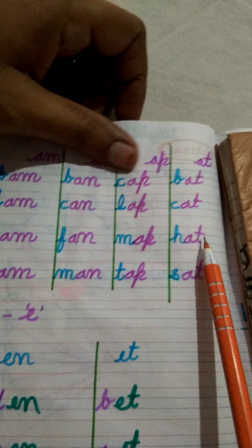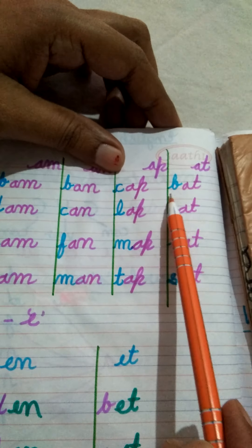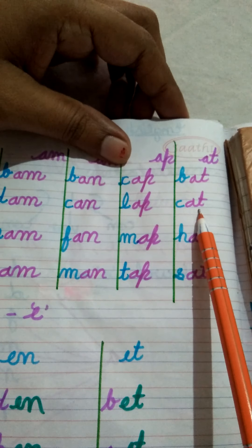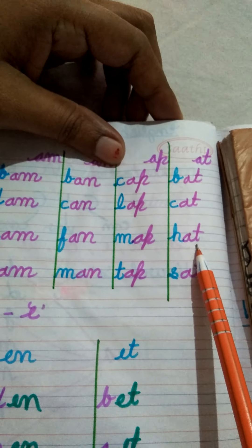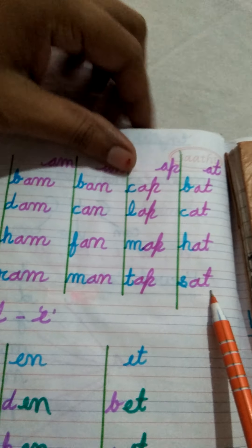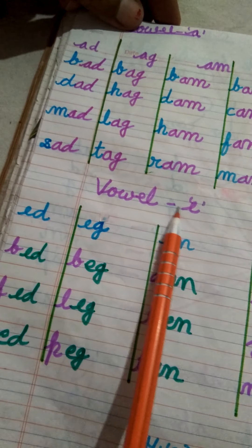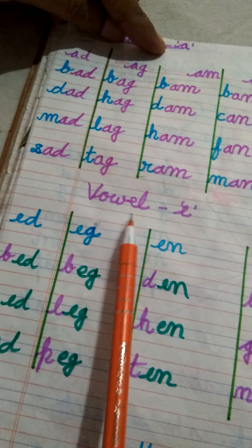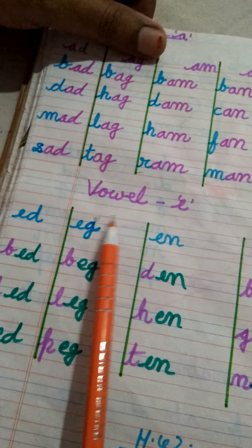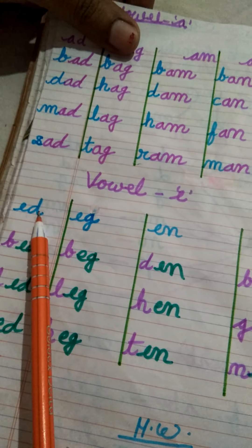F का sound — F, F. F + Ab = FAB. L का sound — L, L. L + Ab = LAB. Okay?